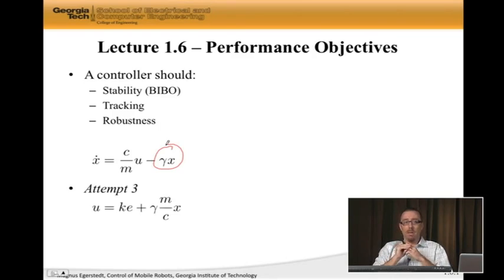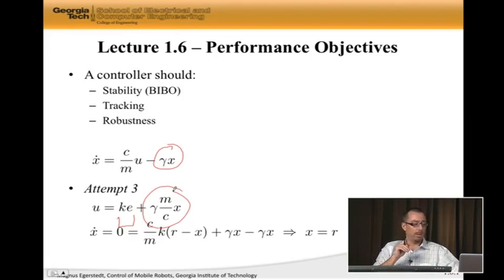So here is my attempt three. I'm going to use this part, which is the proportional part that we already talked about. And then I'm going to add this thing, which is plus gamma m over c times x. Well, why did I do this? Well, I did this for the following reason.